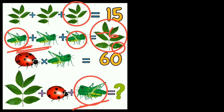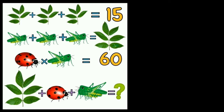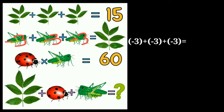That means the value of 1 grasshopper is equal to minus 3. So here: minus 3, here minus 3, and here minus 3. The value of the leaves is minus 6, and 1 grasshopper is minus 3. So minus 6 plus minus 3 equals minus 9. Equation 2 is also solved.